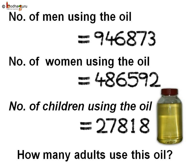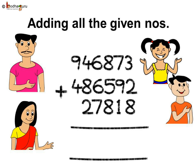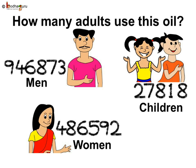Now we need to find the total number of adults who use that oil. Of course we need to add. You may say add all the three numbers as we need to find the total — but wait, this is wrong. Just look at the question again: how many adults use the oil? Adult includes only men and women, not children. So always read the problem carefully. It is not necessary to always use all the numbers given. Figuring out what needs to be done is the crux of any problem.